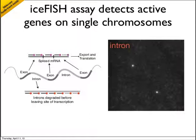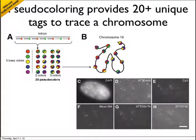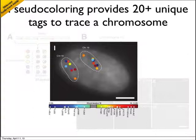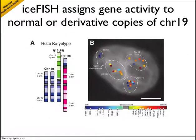We call our assay ICEFISH, which stands for intron chromosomal expression FISH. To assign the chromosomal source of gene activity we need to label the rest of the chromosome. We are able to do this by targeting many genes on the same chromosome through a pseudo-coloring strategy. The tiled probes are alternated in two or three color combinations, and after taking our images in five distinct fluorescent channels we can do image processing and look for co-localization. This produces the transcriptional profiles for each chromosome territory, each with a different subset of the 20 genes actively transcribing. When we apply the ICEFISH assay to a HeLa cell line, the clusters of colored spots representing the chromosome territories recapitulate the HeLa karyotype. We see two intact chromosome 19s and the two derivatives, 1319 and 619.